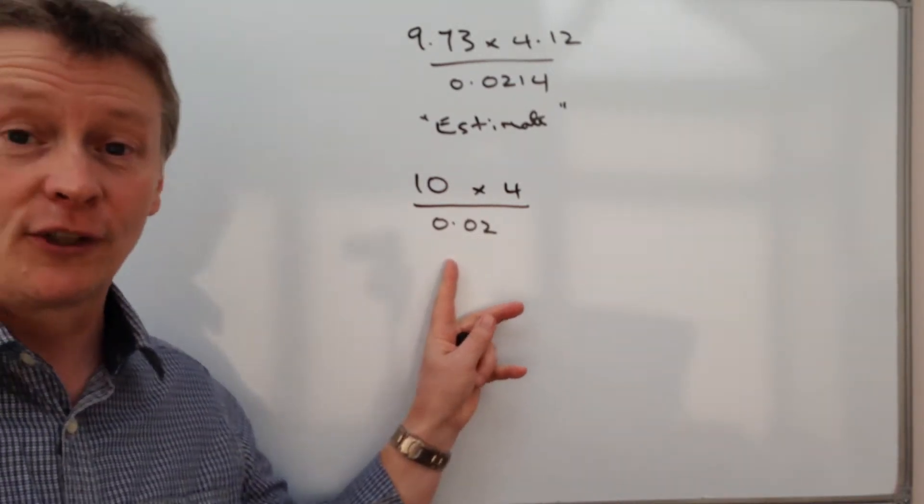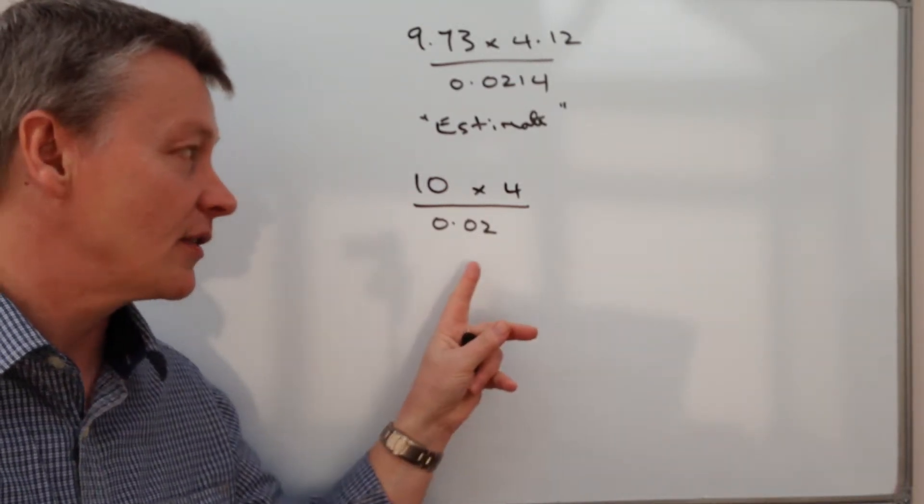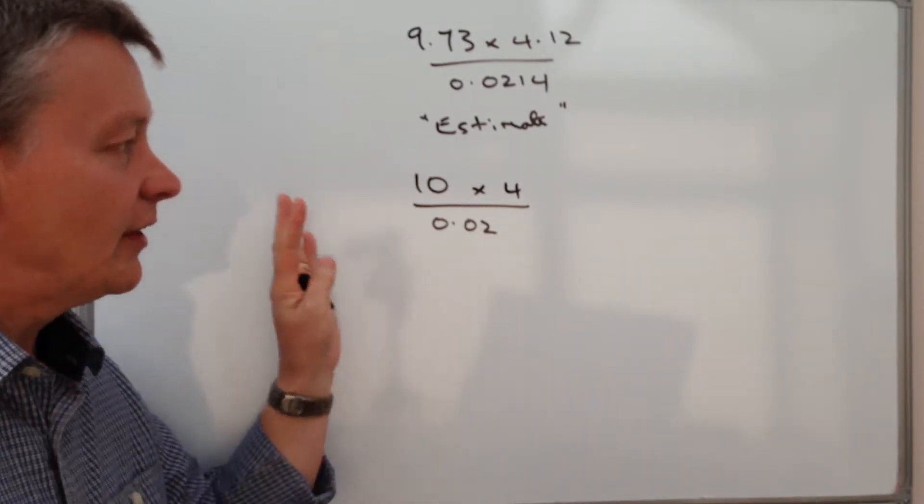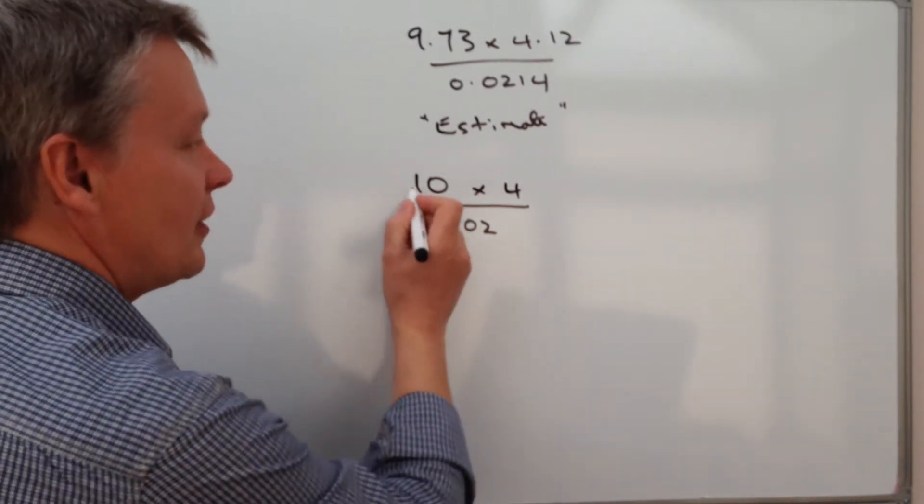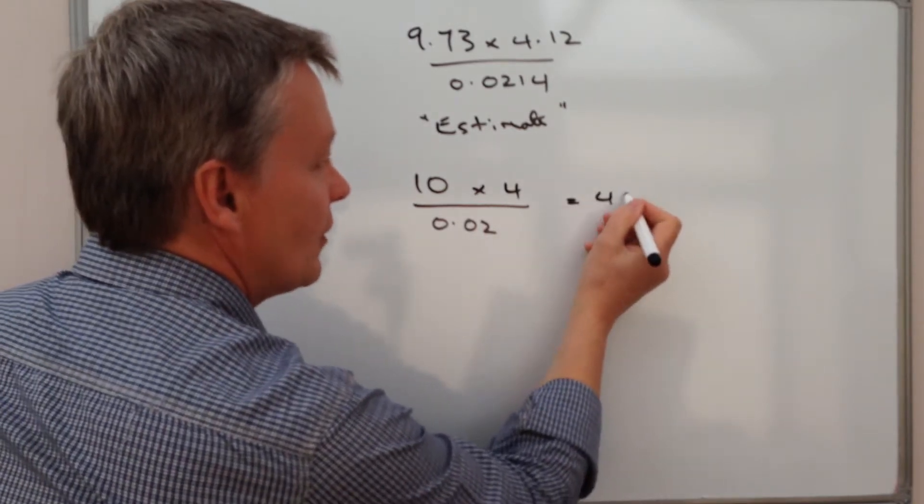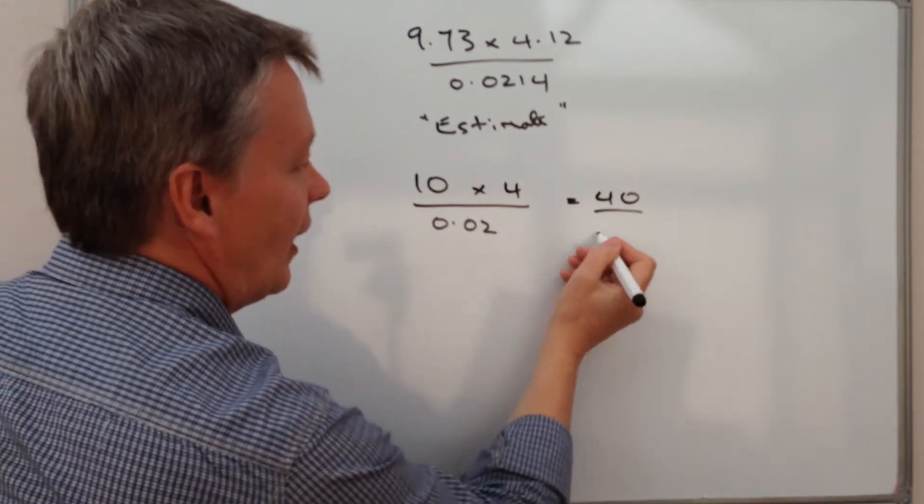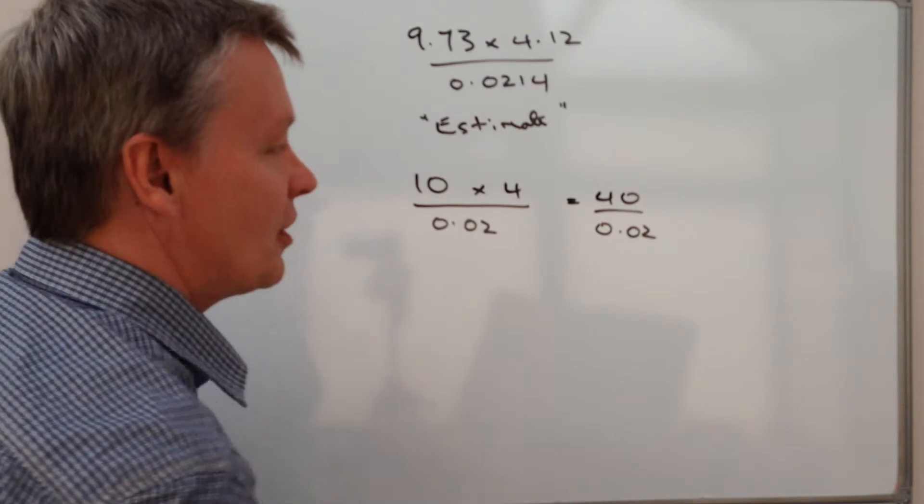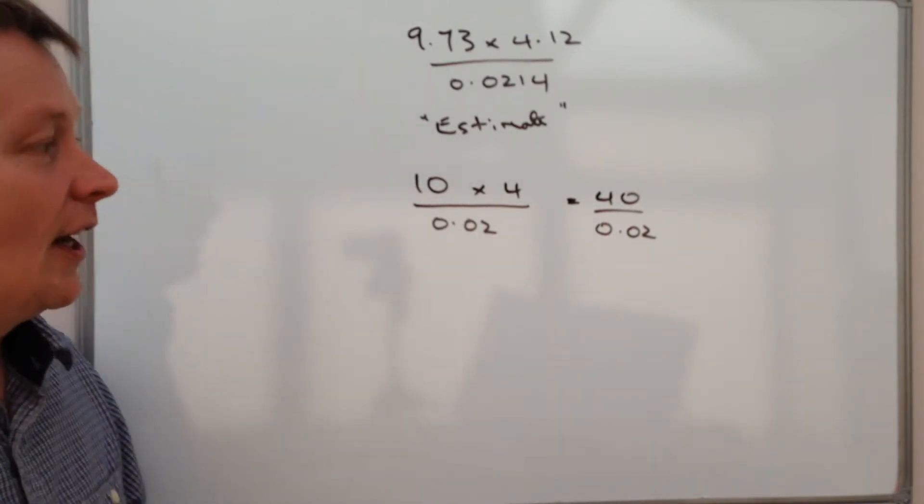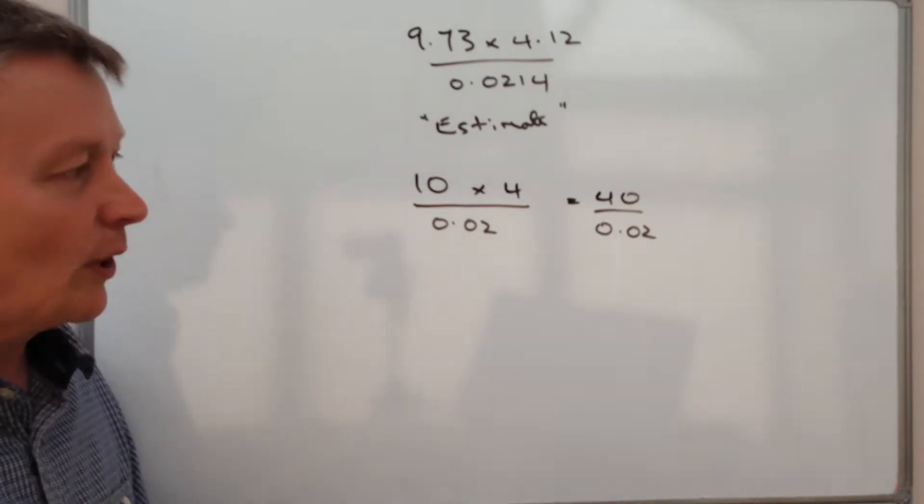I'm going to divide that by 0.02. And this is the bit that's going to cause the difficulty, because the multiplication at the top is absolutely fine. So you've got 10 times 4 is 40. And then I'm dividing that by 0.02, which is a bit awkward.